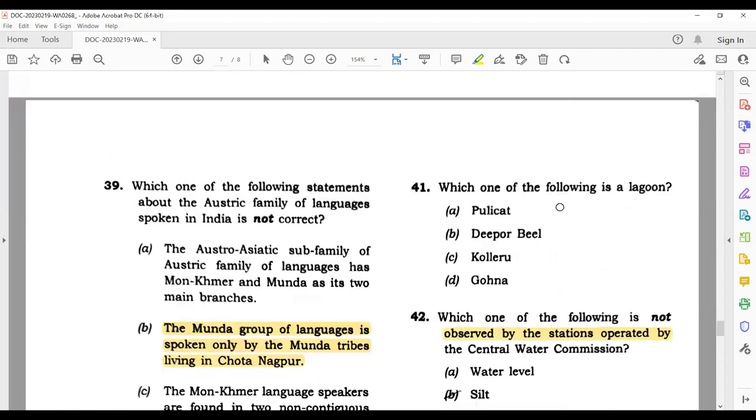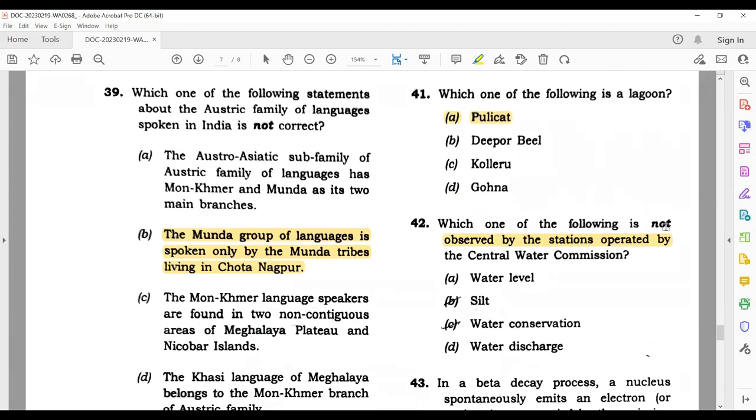Which one of the following is a lagoon? Pulicat. Which one of the following is not observed by the stations operated by the Central Water Commission? Its answer is sea level.